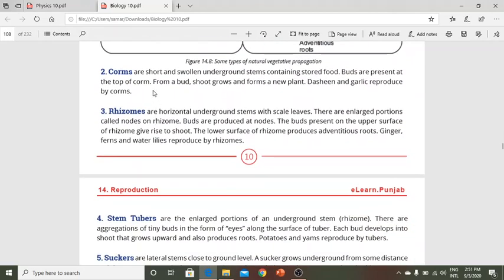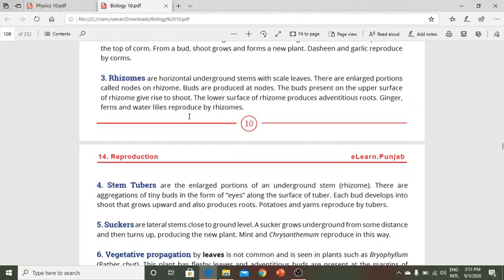Corms are short and swollen underground stems containing stored food. Buds are present at the top of the corm. From a bud, a shoot grows and forms a new plant. Dasheen and garlic reproduce through corms.